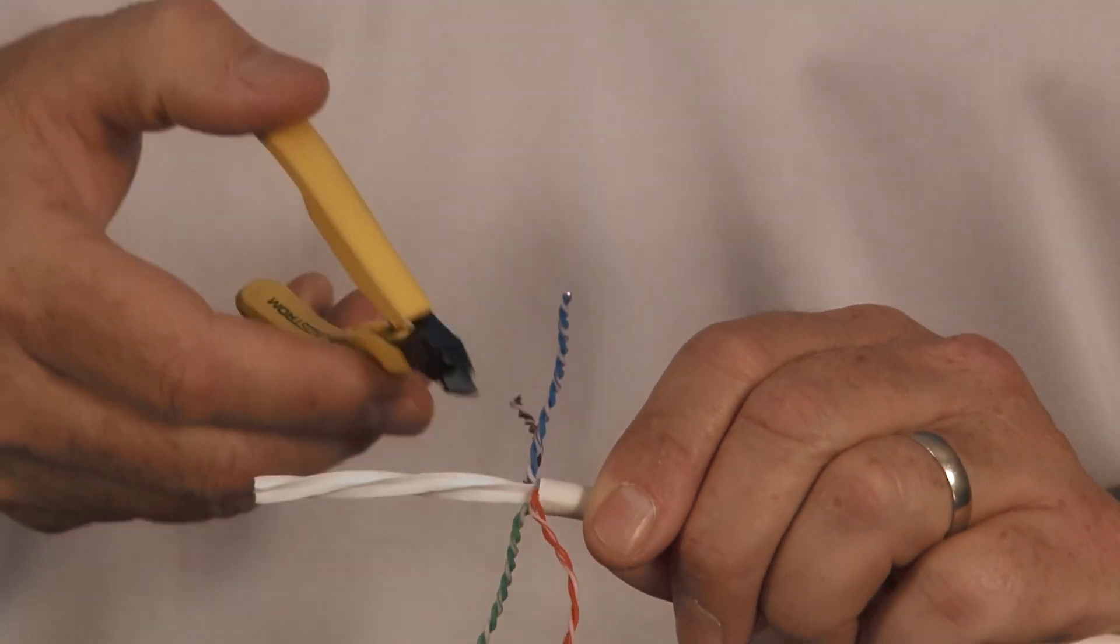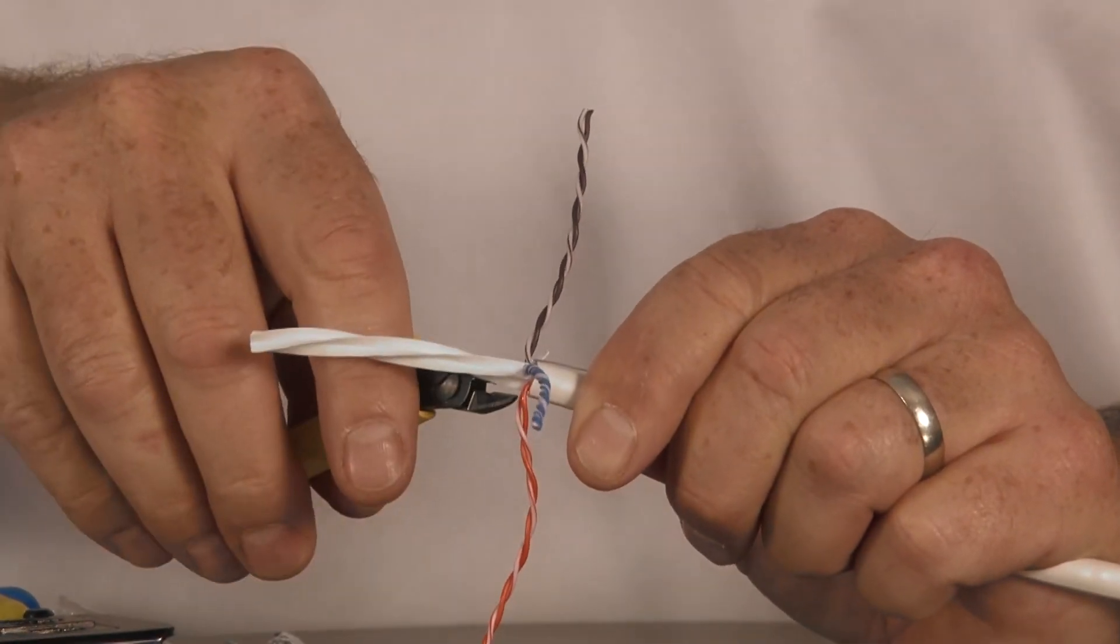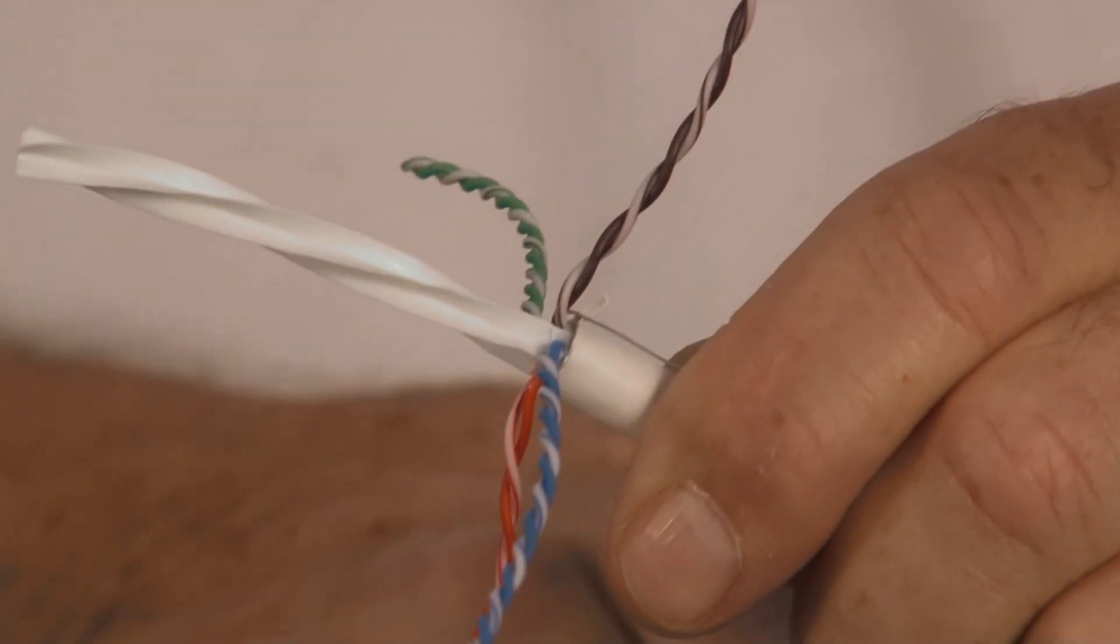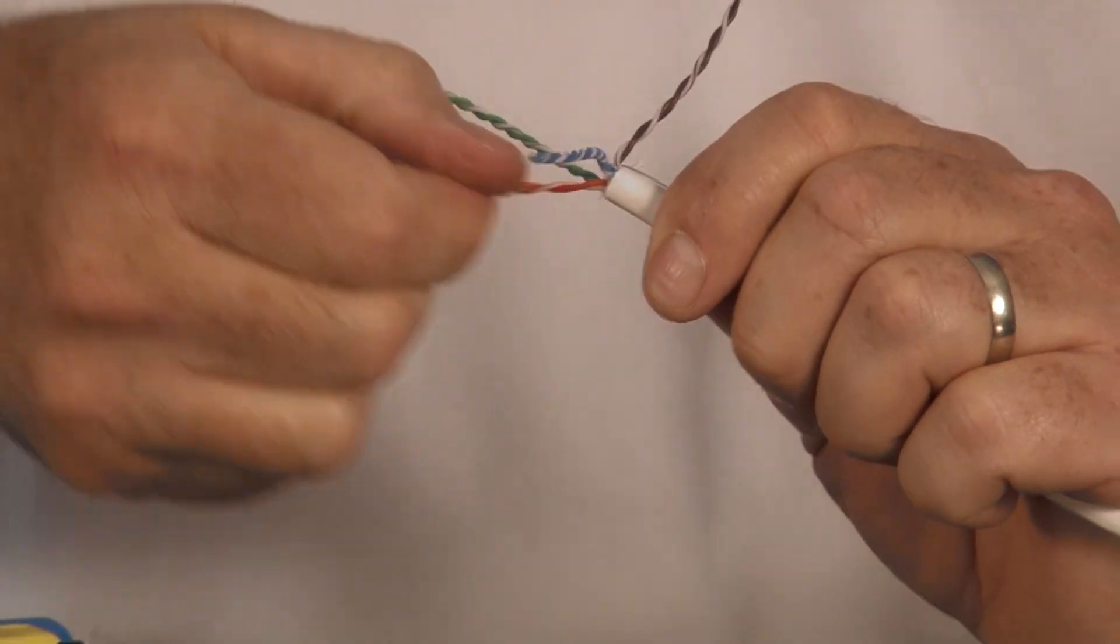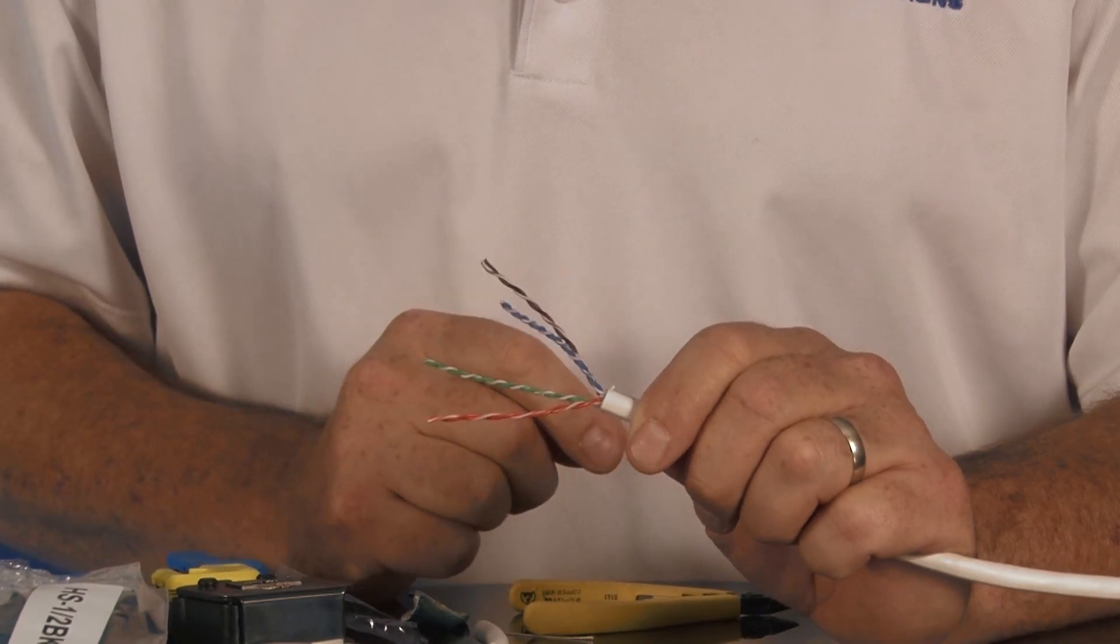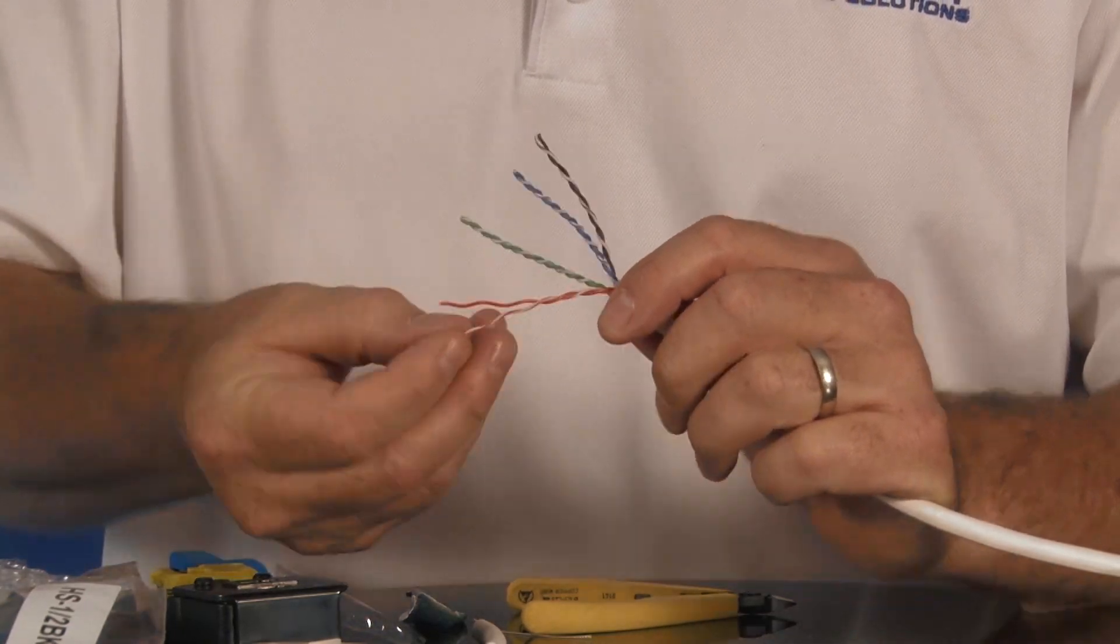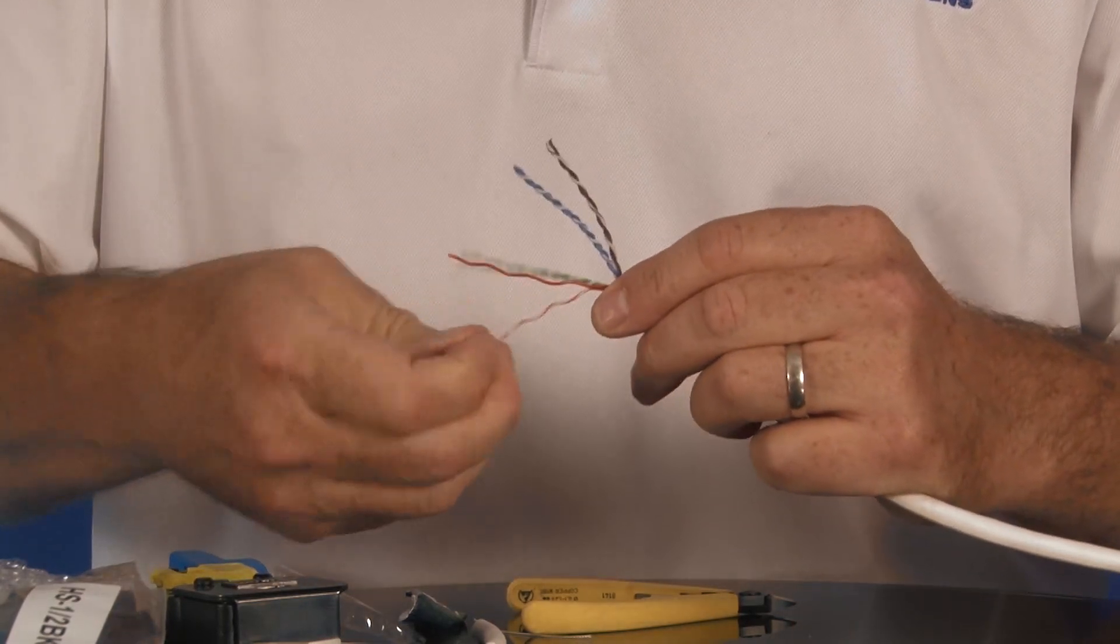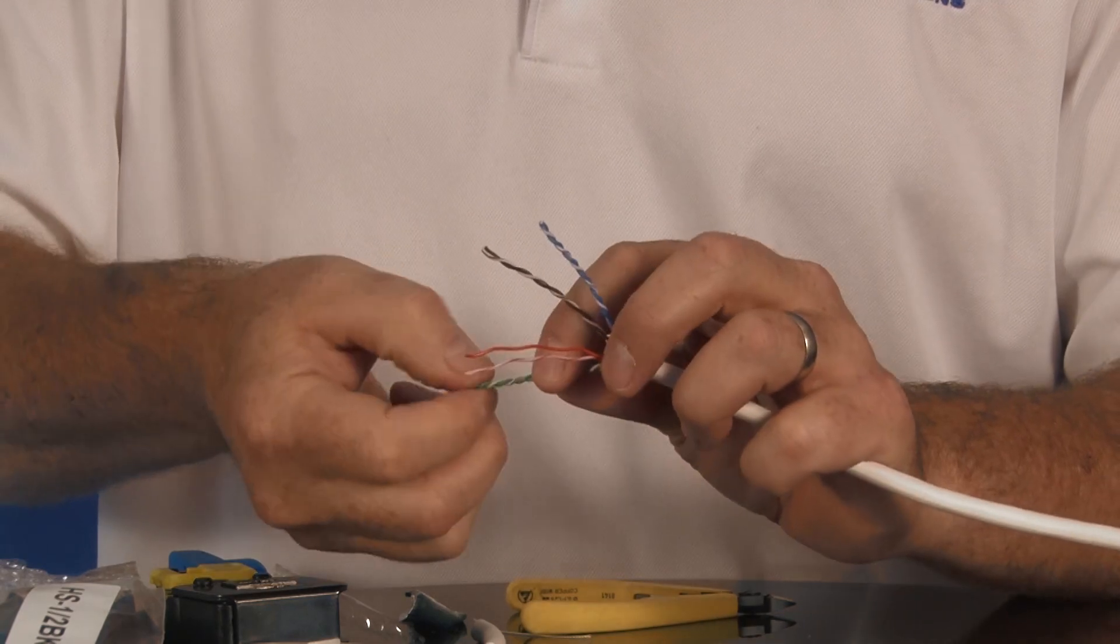Easiest way to do that is taking a pair of diagonal cutters. Cut into each flute at an angle. And then when you're done with that, give it a twist and pop it off. Easiest way to do that. Now, your pairs need to be untwisted to go into the RJ45 connector. Many different techniques for this. I'm going to go ahead and just use my fingers for now. You want to untwist these. It takes a little bit of work. Go down to the jacket. Do not go below the jacket. You don't want to go below the jacket. But untwist each pair.